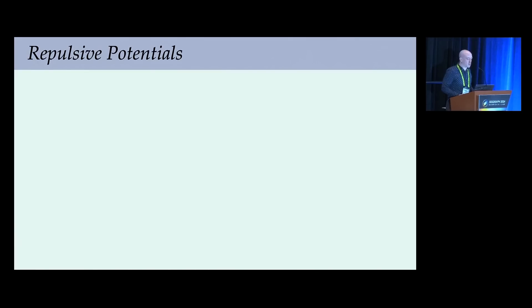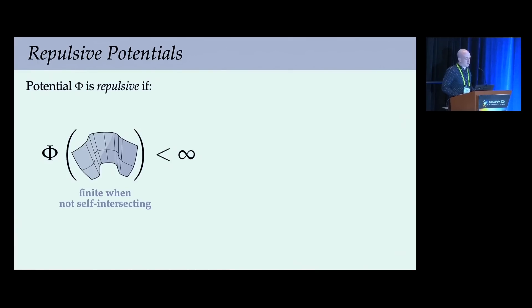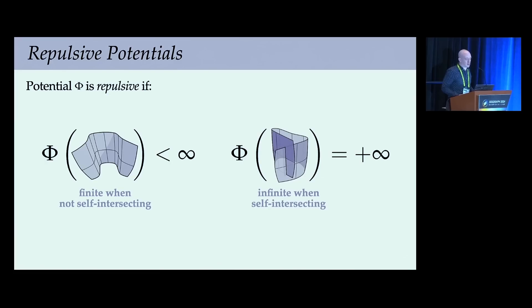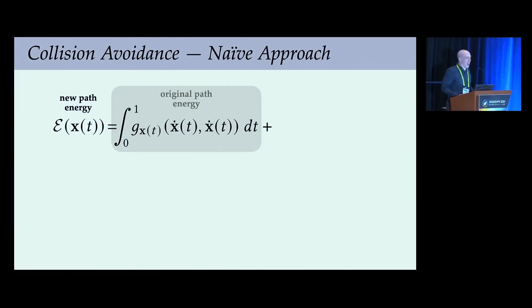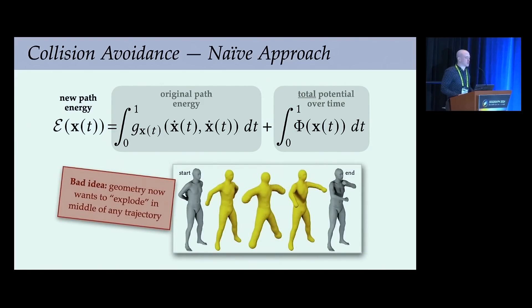One natural idea is a repulsive potential—something that discourages intersections. A potential phi is repulsive if it's finite for non-intersecting states and approaches infinity as we get closer to intersections. A tempting idea is to take our original path energy and simply add the total potential over time. Unfortunately, this is a bad idea because the geometry wants to explode away from itself: not only do the arms fly away from the body, but the surface inflates to reduce the repulsive potential. So we take a different path.